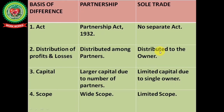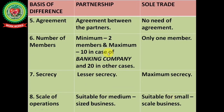Regarding capital — in sole trade business there is limited capital as only a single person is involved. Regarding scope — partnership has a very wide scope due to a large number of persons, while sole trade has a limited scope of business activities. Regarding agreement — partnership requires an agreement between partners, while no agreement is needed in sole trade. Regarding number of members — partnership requires a minimum of 2 and maximum of 20 (or 10 for banking), while sole trade requires only one member.